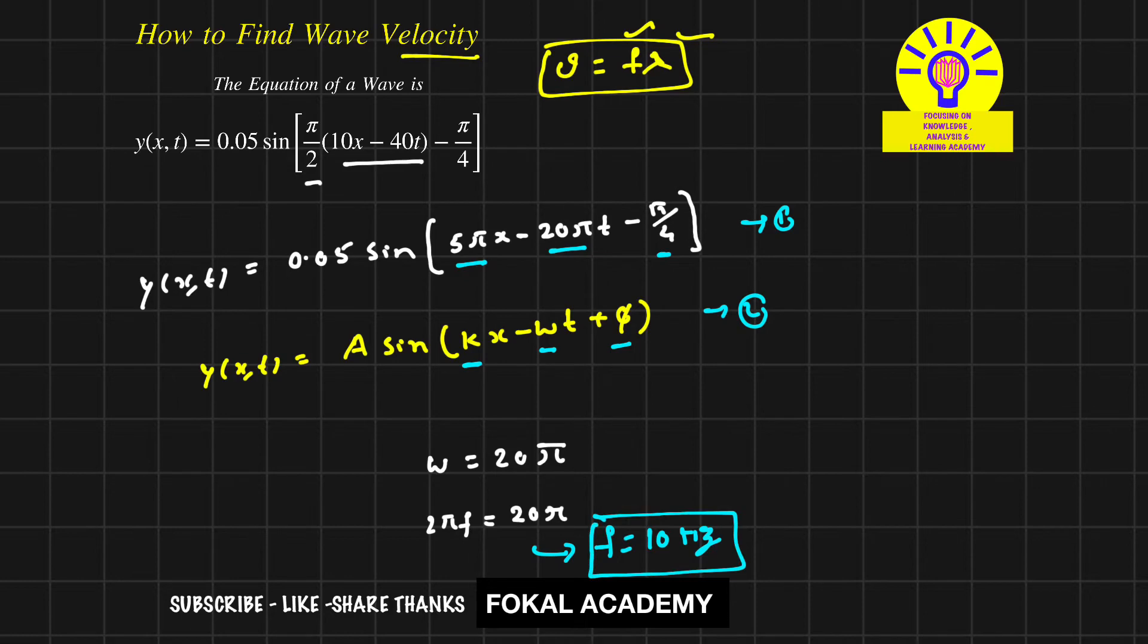Now for the x coefficient, k = 5π. Here k is the wave number, equal to 2π/λ = 5π. By simplifying this, we get λ = 0.4 meters.